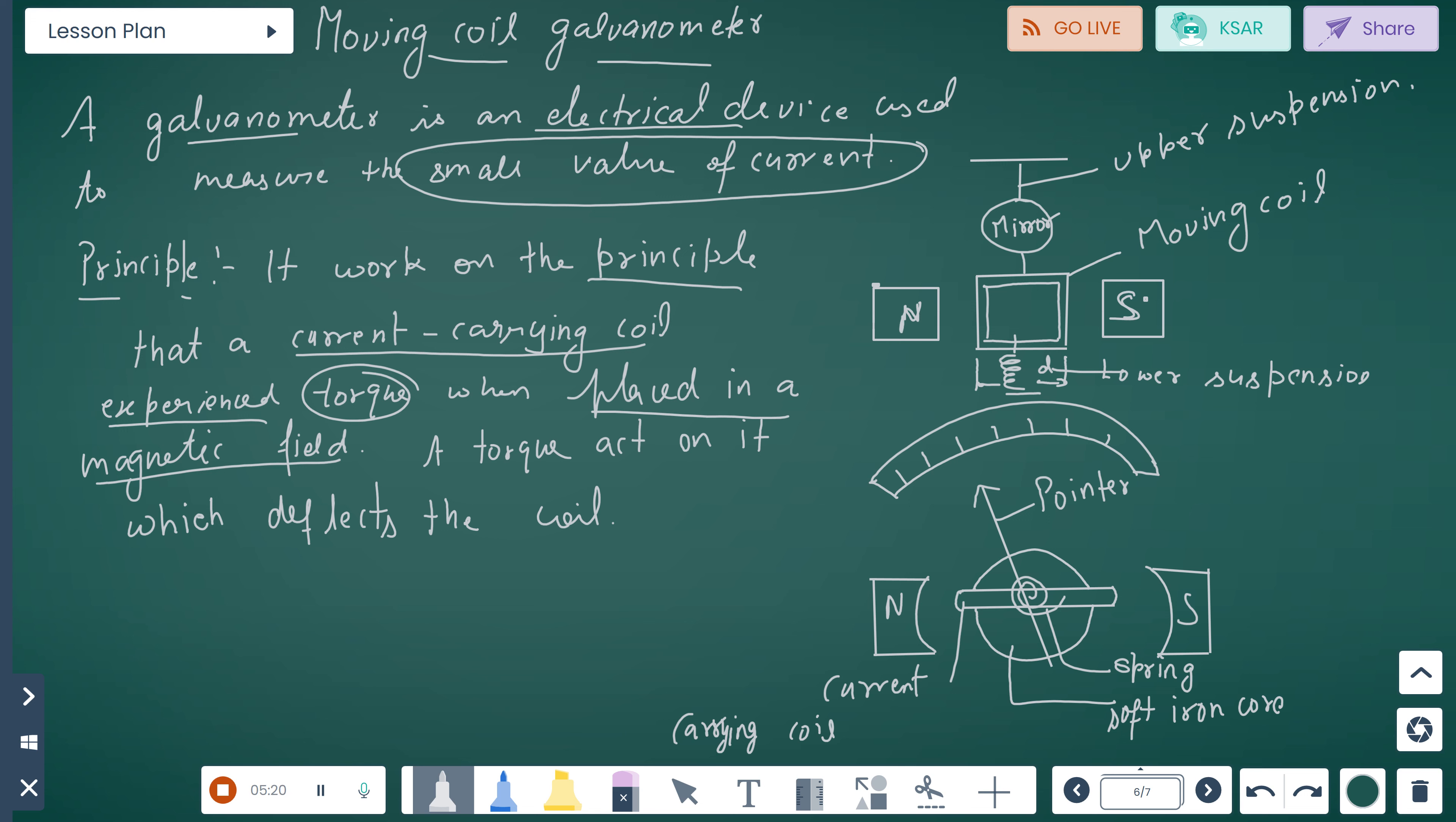A torque acts on it which deflects the coil. We have a mirror and then south pole, a moving coil here, we have a suspension. Coil, distance between them, lower suspension, upper suspension. We have a pointer, N and S poles, we have a spring here, and soft iron core. Current-carrying coil, when it deflects, it shows the pointer.